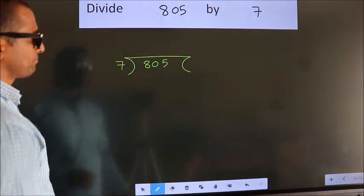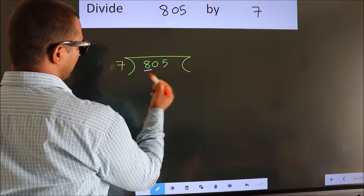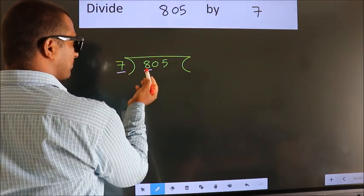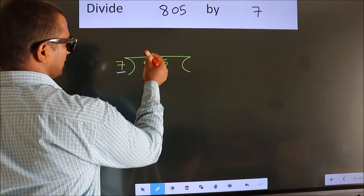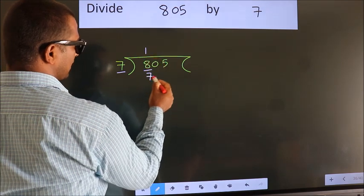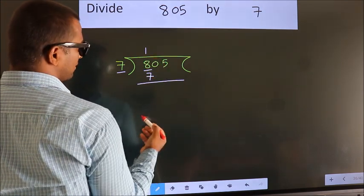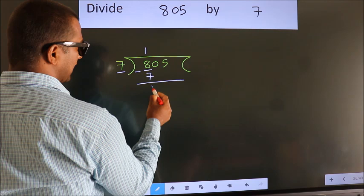Next. Here we have 8, here 7. A number close to 8 in 7 table is 7 once 7. Now we should subtract. We get 1.